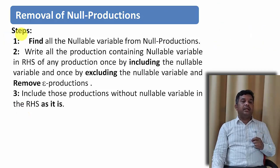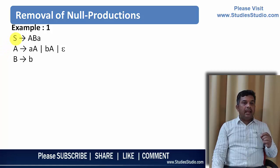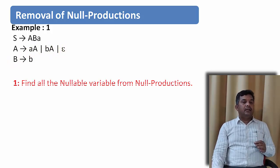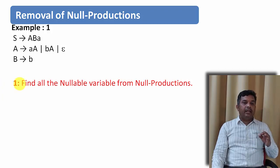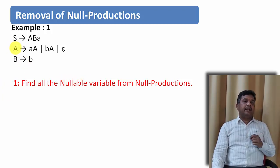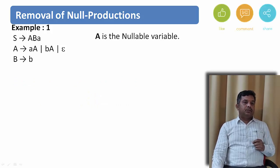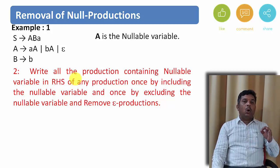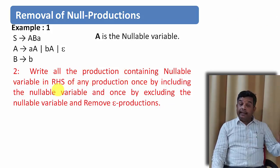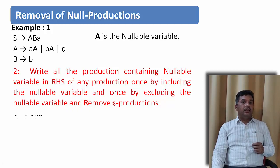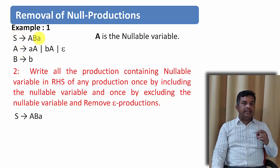Let us apply these three steps to an example. Given the grammar: S derives ABA; A derives AA or BA or epsilon; B derives B. Step one: find all nullable variables. A derives epsilon is present, so A is a nullable variable. Step two: write all productions containing A on the right-hand side once including A and once excluding A.